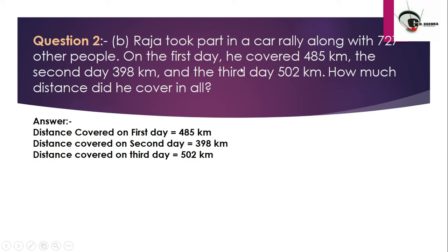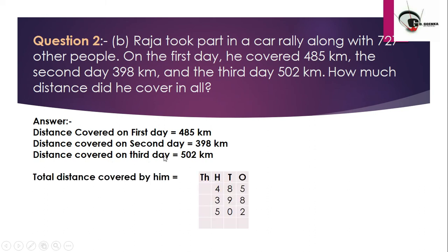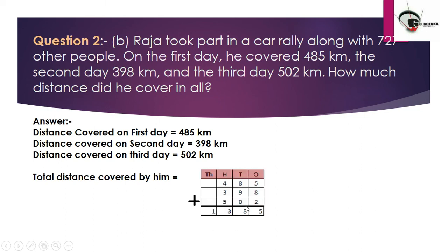Part B: Raja took part in a car rally along with 727 other people. On the first day he covered 485 km, the second day 398 km, and the third day 502 km. How much distance did he cover in all? Note that 727 other people is not needed for finding total distance. We write only: distance covered on day 1, day 2, and day 3, then add to get 1,385 km.